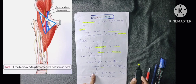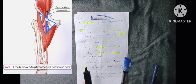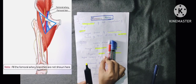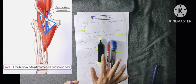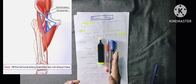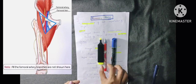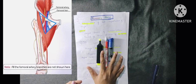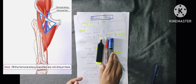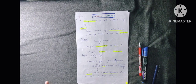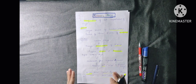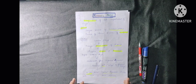In the femoral triangle, the arrangement from medial to lateral is: femoral vein, femoral artery, and femoral nerve. So the femoral nerve is lateral to the femoral vessels. The femoral triangle is about 4 cm below the inguinal ligament, where the femoral nerve divides into the anterior division and posterior division.